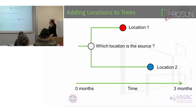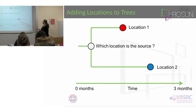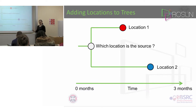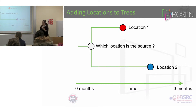I'm going to start by talking about locations on trees. This is our very simple little part of a tree. This is sequence one and sequence two as we had before, except now we know that sequence one was found in location one, and sequence two we find in location two. And what we want to calculate is which location was the source for these two.